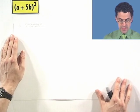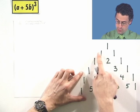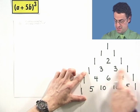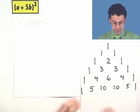Quantity (a + 5b) cubed. Well, here we don't have to go too far down the chart, so we have 1, 2, 3. So, this is going to be the coefficients, 1, 3, 3, 1, but it's going to be a little bit tricky, so let's write it out carefully.